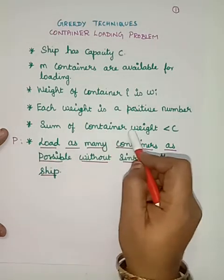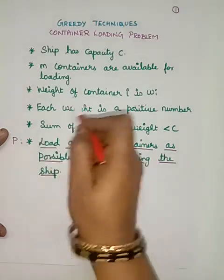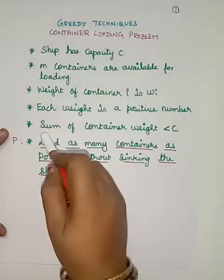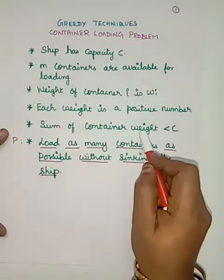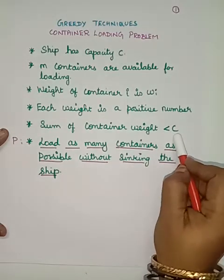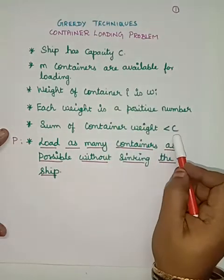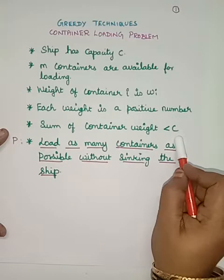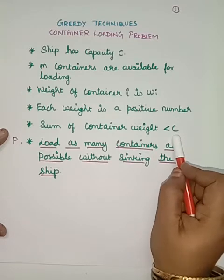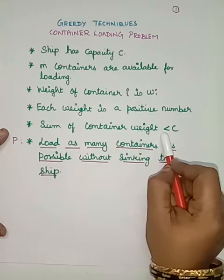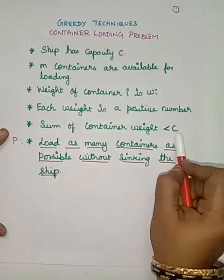After loading every container into the ship, the sum of container weights should be less than the capacity C of the ship. If it exceeds the capacity, the ship will sink into the sea. That is why the sum of the container weight should be less than C.